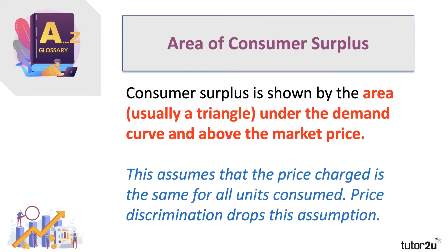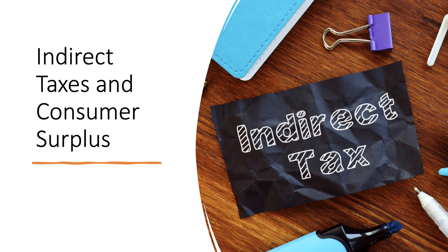Keep in mind, however, this assumes that the price charged is the same for all units consumed. Things like price discrimination by a monopolist drop this assumption, because they start charging different prices to different consumers for essentially the same product. So let's look at four examples of how you can use consumer surplus. I do encourage my students to bring this idea into their analysis — it helps to develop a diagram and gets you to a higher level of response.